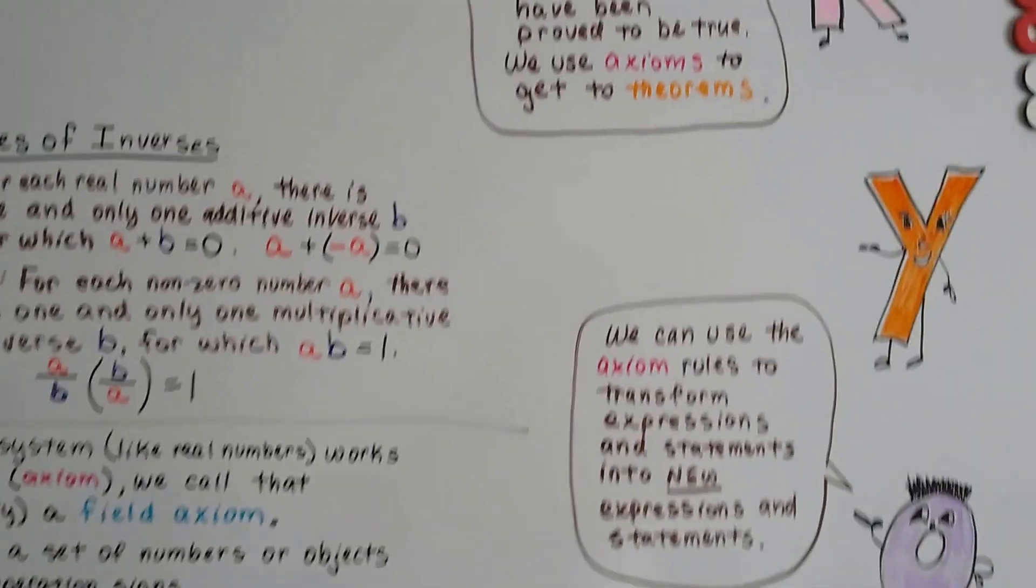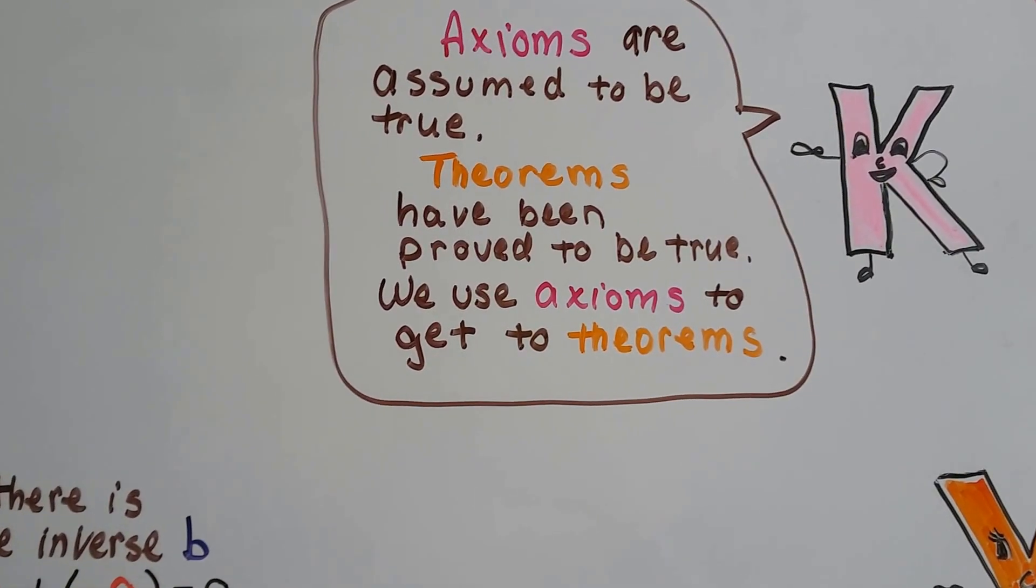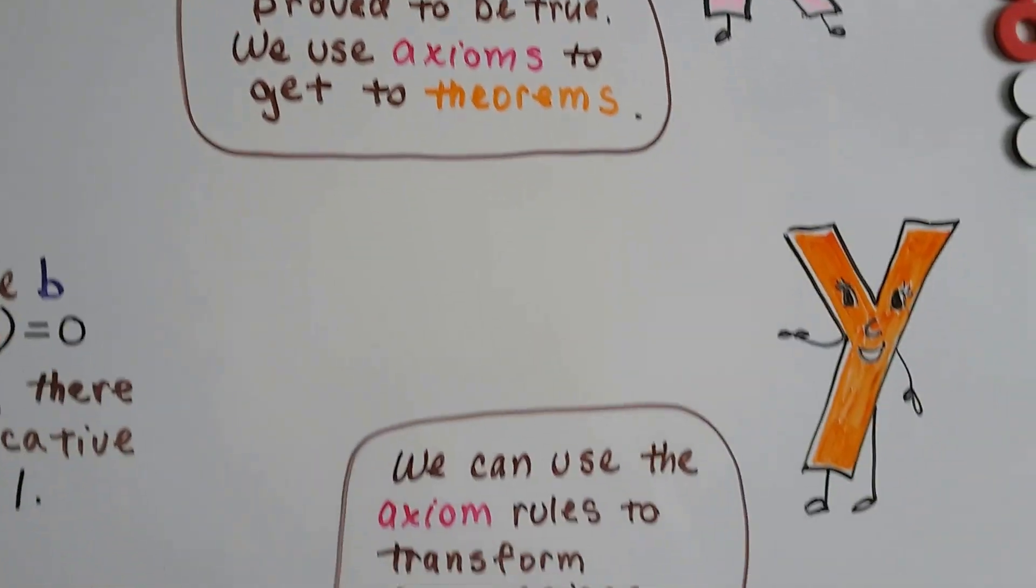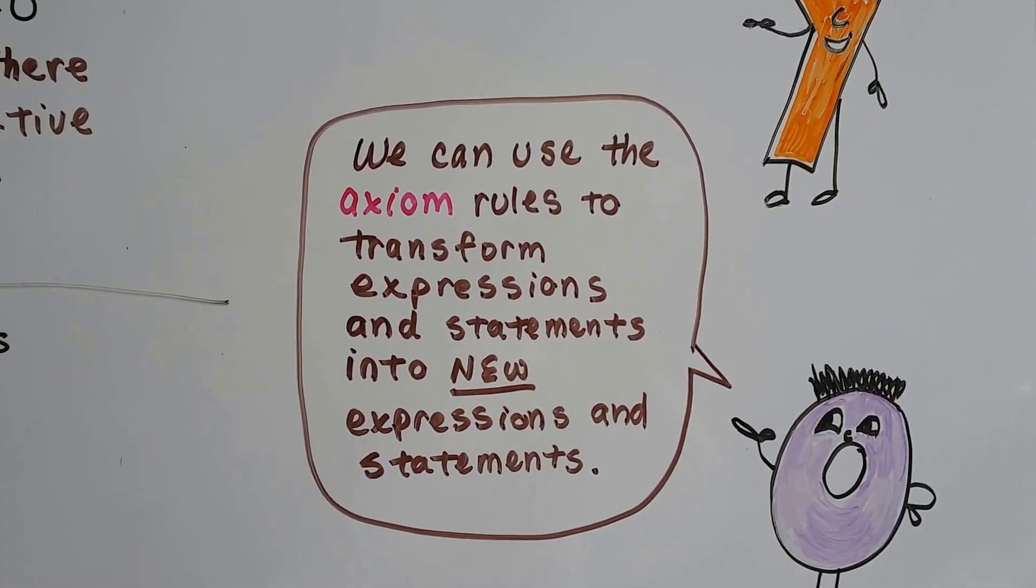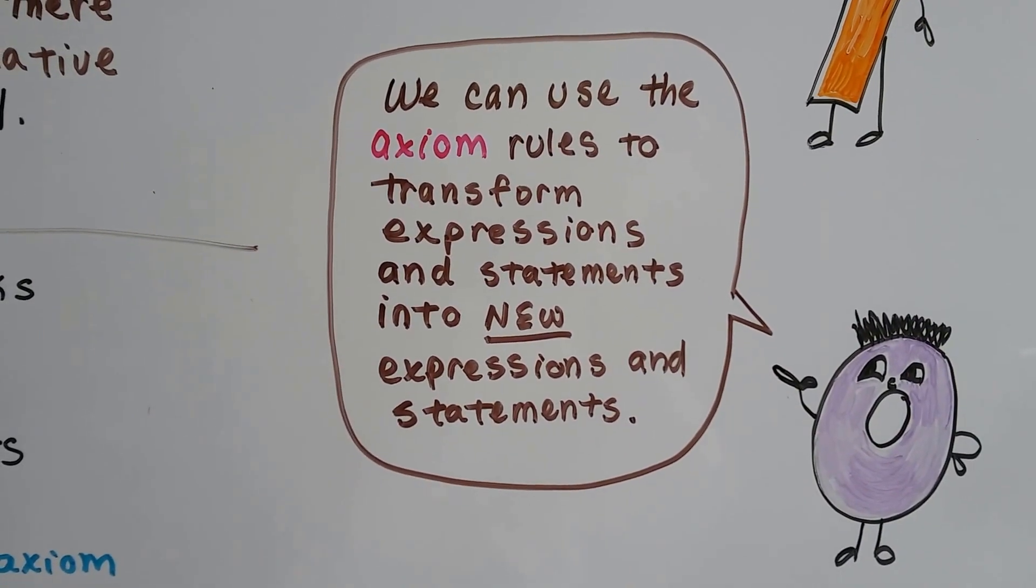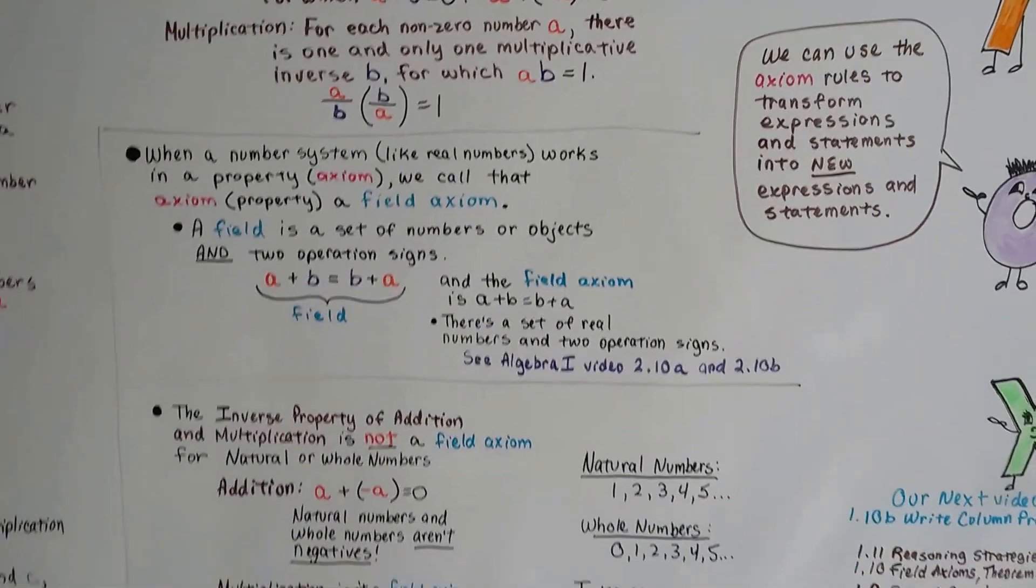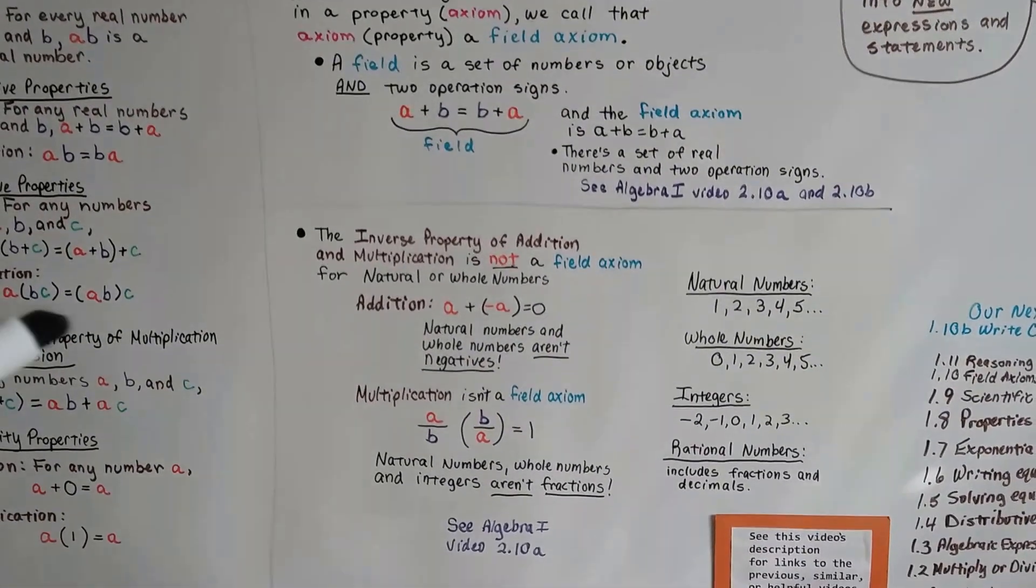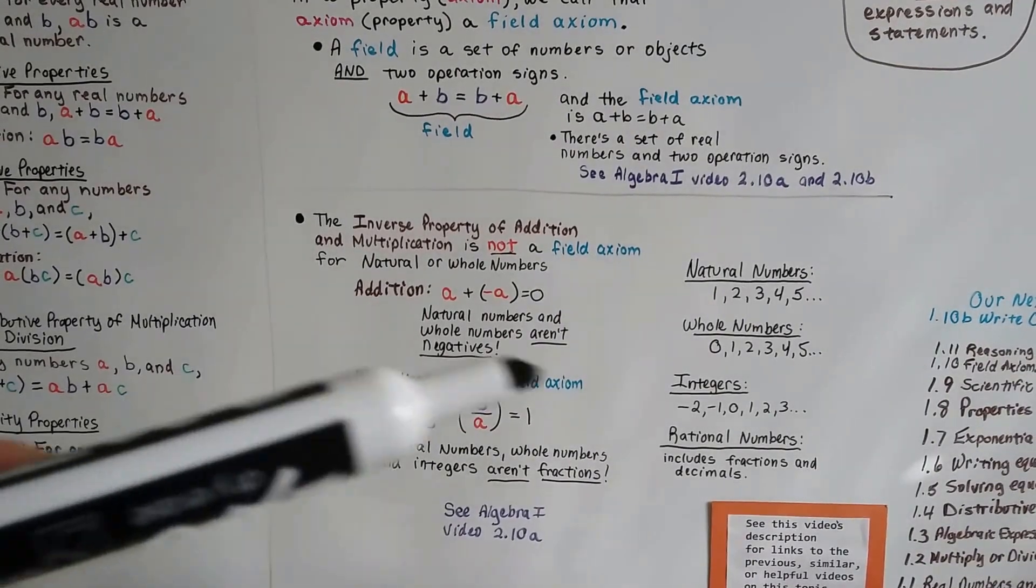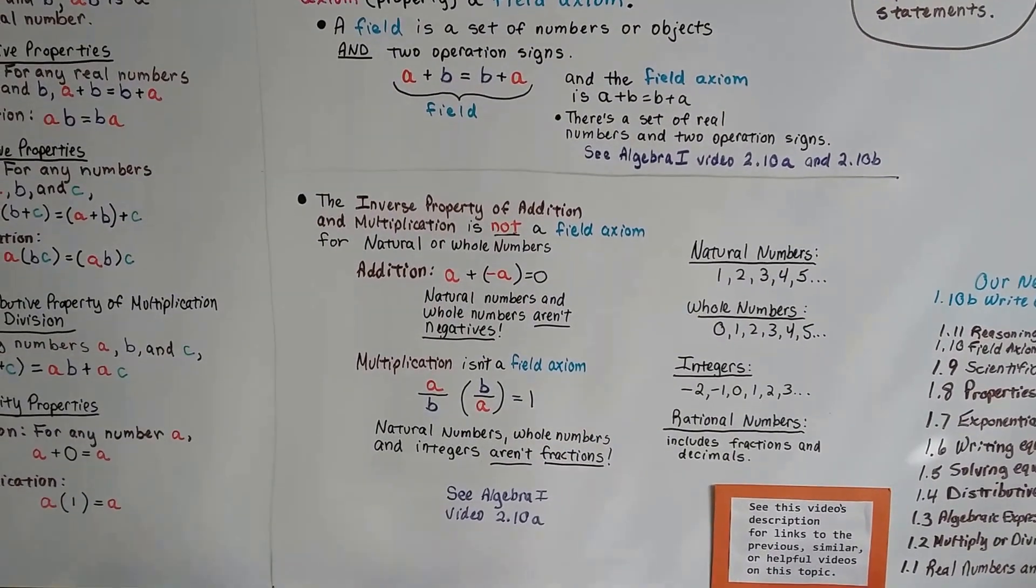Alright, so axioms are assumed to be true. Theorems have been proved to be true. And we use axioms to get us to theorems. We can use the axiom rules to transform expressions and statements into new expressions and statements. So if anyone asks you, does the inverse property of multiplication work for integers, you know that you can say no, because integers are not fractions and you can't multiply by the reciprocal to get a 1.